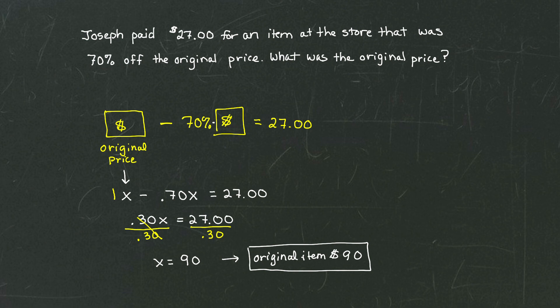If we take 70% of $90, subtract it from 90, we should get $27, the sale price. I hope this makes sense. If you have any questions, don't hesitate to reach out.